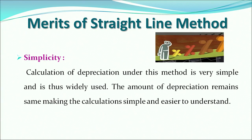Now, what are the advantages or merits of using the straight line method? First, it is a simple method — the calculation of depreciation is very straightforward, and since the amount remains constant it is easier to calculate and understand. The second merit is that the asset is completely written off, meaning the book value of the asset is reduced to either its scrap value or zero at the end of its useful life.